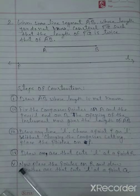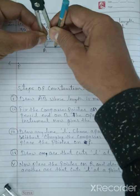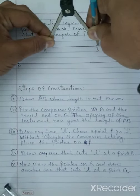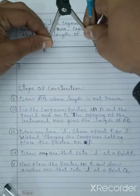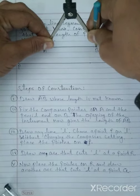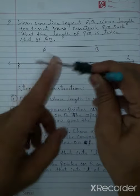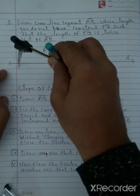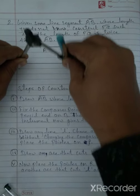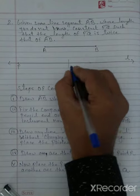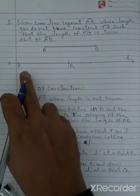To make a copy of AB, we use the compass. We put the pointer on A and the end of the pencil on B — this is the length of AB. Without changing the setting, we put the pointer on P and cut an arc on line l. We name this point R. This first copy of AB gives us segment PR, which is a copy of AB.